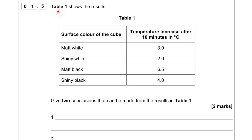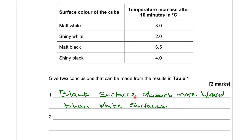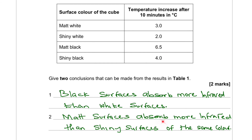Question 1.5: The table shows the results. Give two conclusions that can be made from the results in Table 1. The black surfaces absorbed more infrared than the white surfaces. Also, matte surfaces absorb more infrared than shiny surfaces of the same color — so matte is more than the shiny ones.